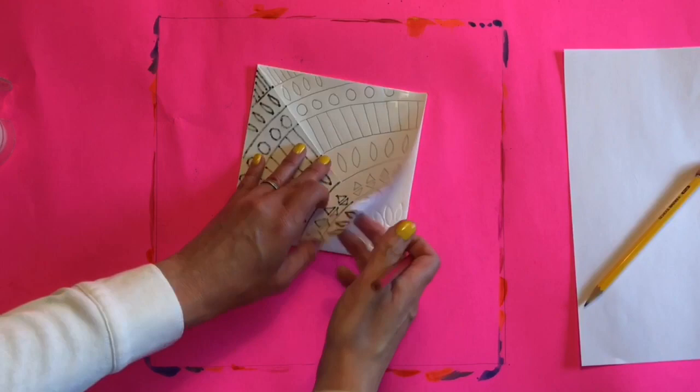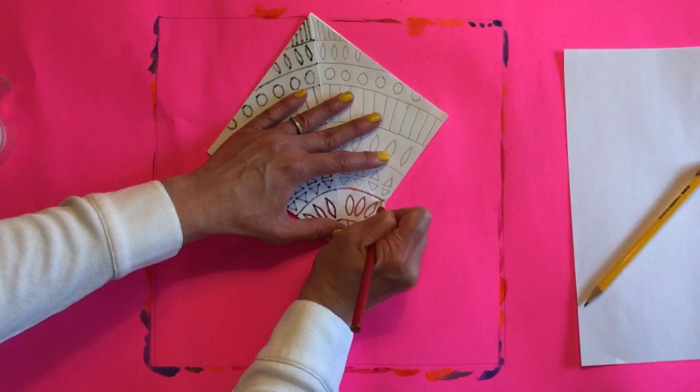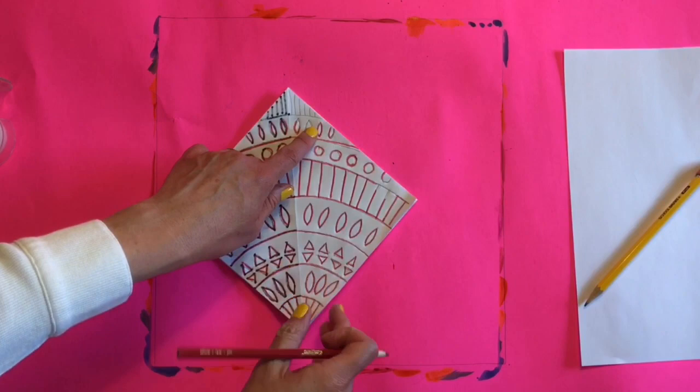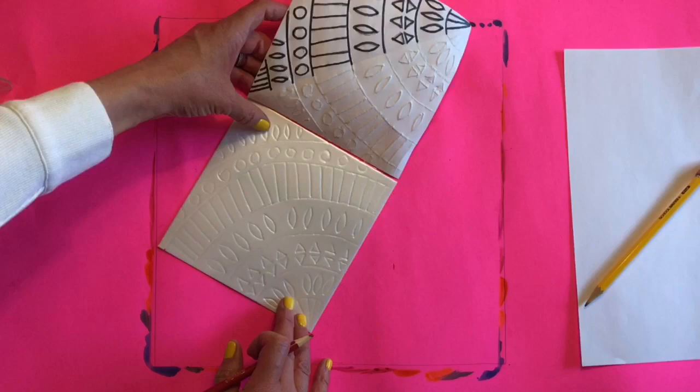As you trace over your lines, you'll see that it transfers onto the printing plate. You'll also notice as you trace that it might tear your paper here and there, but that's totally fine. It's not going to affect your print at all. You won't see your colored pencil lines where you draw over any tape, but that's okay. It will still transfer your drawing. Just make sure you press hard over that area where there's tape.